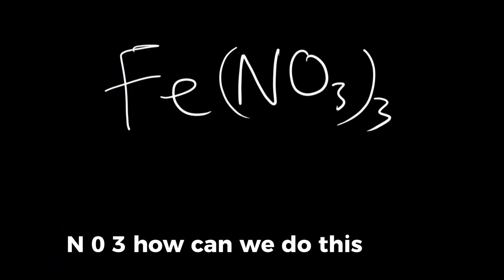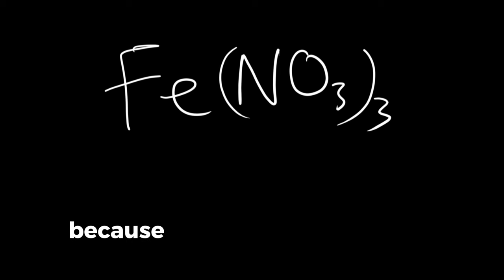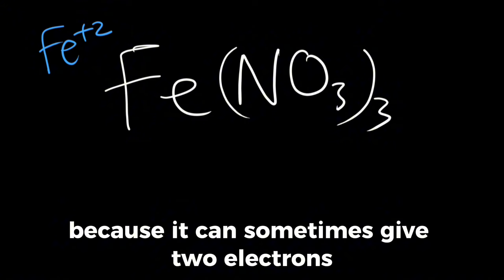What if we have a compound like this: Fe(NO3)3? How can we do this? We can see here that Fe is a type 2 cation because it can sometimes give two electrons, and Fe can sometimes also give three electrons. So how can we name this?